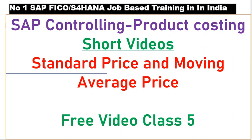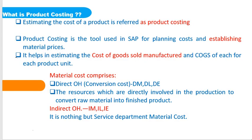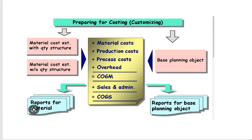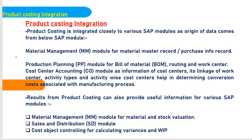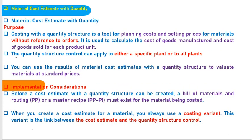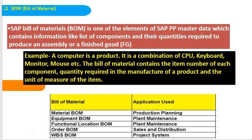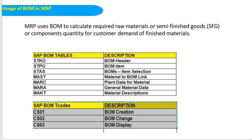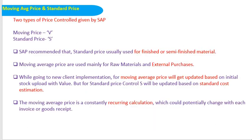You can look at these videos in my playlist, and some videos are also available in the comment box. So far we have uploaded content regarding what is product costing, the objectives of product costing, preparing for costing, product costing integration, material cost estimate with quantity structure, bill of materials, and the usage of BOM in MRP. Today's topic is moving average price and standard price.